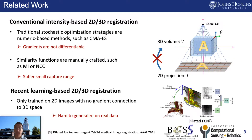Conventional intensity-based 2D-3D registration uses numerical methods such as CMA-ES. However, the gradients are not differentiable, and the similarity functions are manually crafted — such as mutual information or normalized cross-correlation — which requires the initialization to be close to the global minimum.